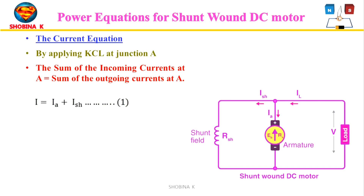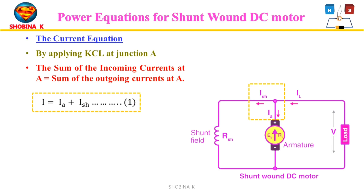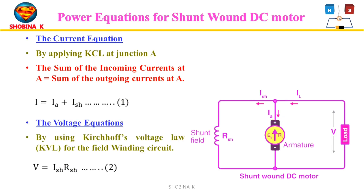For the shunt motor current equation, applying Kirchhoff's current law at junction A: I = IA + ISH, where I is input line current, IA is armature current, and ISH is shunt field current. For the voltage equation, the input voltage performs two tasks: it controls the induced back EMF and supplies the ohmic IA·RA drop. Using Kirchhoff's voltage law for the field winding circuit: V = ISH × RSH, where V is supply voltage, ISH is shunt current, and RSH is shunt resistance. For the armature winding circuit: V = E + IA × RA, where E is back EMF, IA is armature current, and RA is armature resistance.